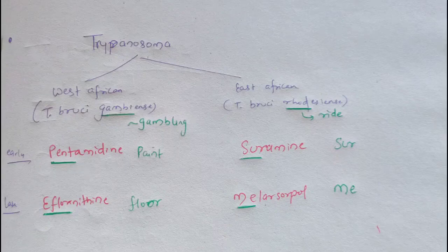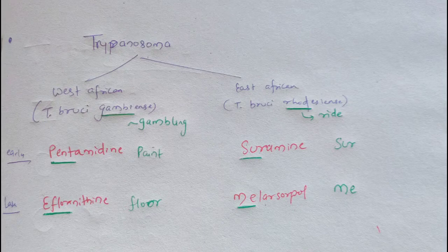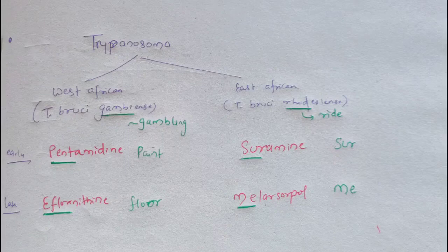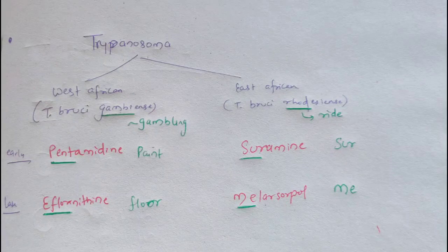Now, how to remember them? Notice the word highlighted in Trypanosoma brucei gambiense — 'gambiense' can be correlated with gambling. Gambling is a game usually played in western countries, so gambling corresponds to West African sleeping sickness. Trypanosoma brucei rhodesiense is the only one remaining, so it corresponds to East African sleeping sickness.